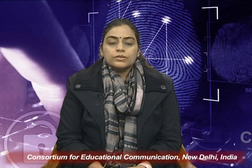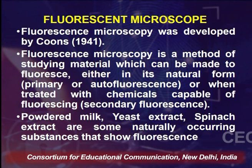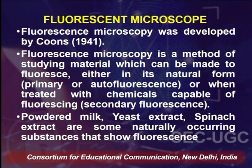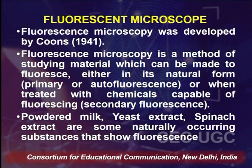Fluorescence microscope was developed by Kuhns in the year 1941. It is a method of studying material which can be made to fluoresce either in its natural form — i.e., primary or autofluorescence — or when treated with chemicals capable of fluorescence, which is known as secondary fluorescence. Examples of substances which show autofluorescence are powdered milk, yeast extract, spinach extract, and some other naturally occurring substances.